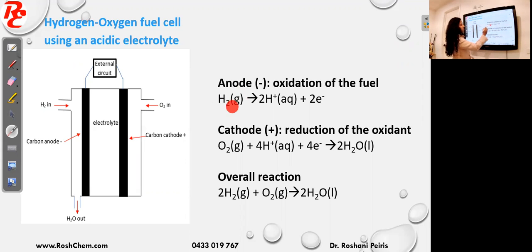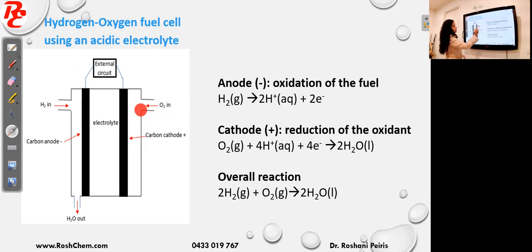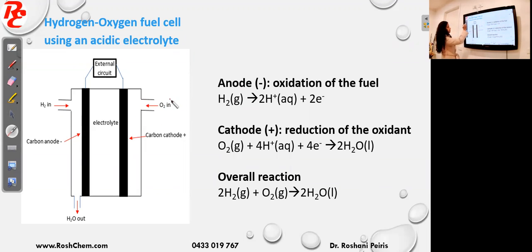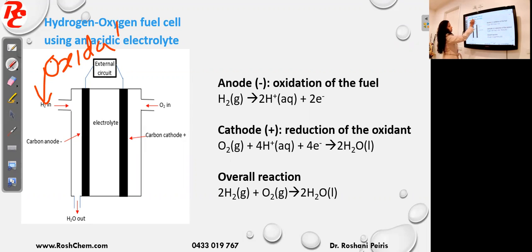That's why the anode reaction starts with hydrogen. In a fuel cell, the oxygen gas undergoes reduction, and reduction happens at the cathode. In other words, hydrogen gas is the reductant and oxygen gas undergoes reduction, making it the oxidant. So hydrogen gas undergoes oxidation and oxygen gas undergoes reduction.